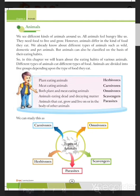We see different kinds of animals around us. All animals feel hungry like us — they need food to live and grow. However, animals differ in the kind of food they eat, so different animals eat different categories of food.